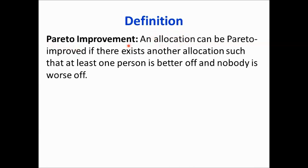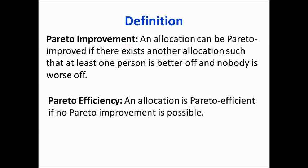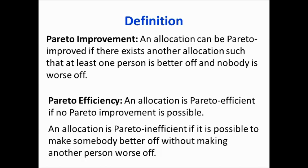We now use this definition of Pareto improvement to define Pareto efficiency. An allocation is Pareto efficient if no Pareto improvement is possible — meaning you cannot find another allocation such that at least one person is better off and nobody is worse off. Correspondingly, an allocation is Pareto inefficient if it is possible to make somebody better off without making another person worse off.